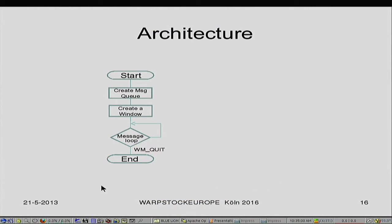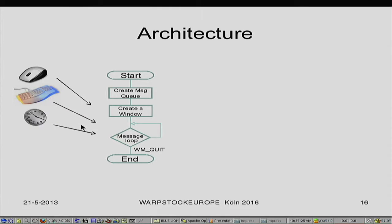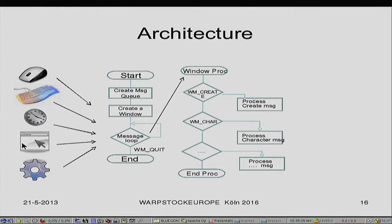Normally we have: create the message queue, create a window, go to our message loop, handle the various messages, and at a certain moment in time we get the quit message and we're finished. We need to look at all these messages coming from these devices and do something with them. When a message comes in, that message for that window goes to that procedure, and that procedure will handle those messages.